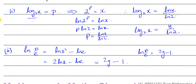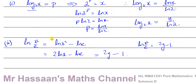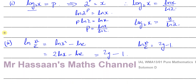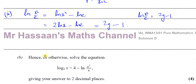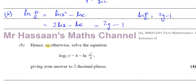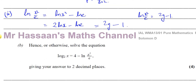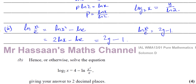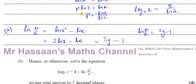Now we can go on to part b. It says 'hence or otherwise, solve this equation.' Normally when a question says 'hence,' you have to look at the previous answer and use your results to solve what you're asked. 'Otherwise' is normally more difficult than 'hence.'